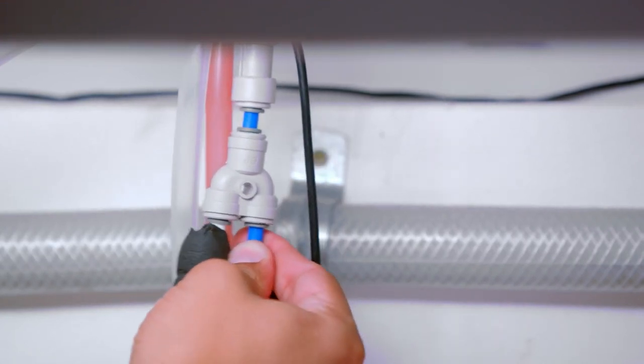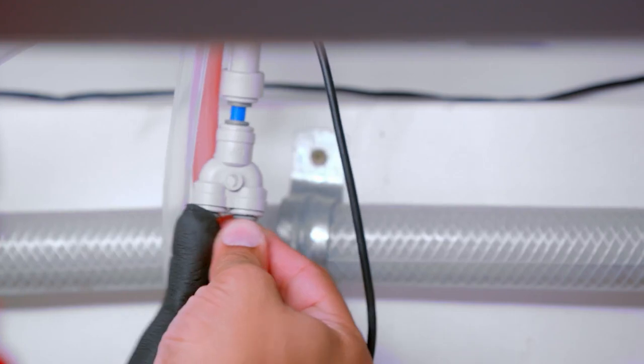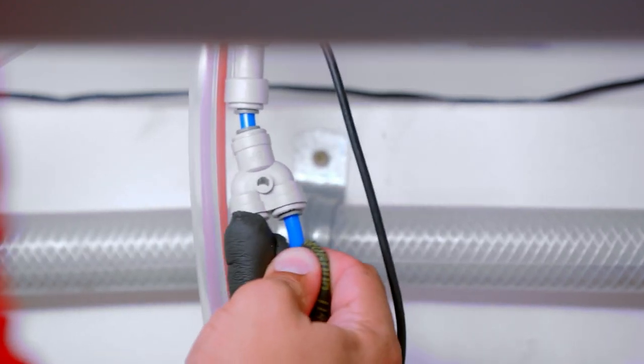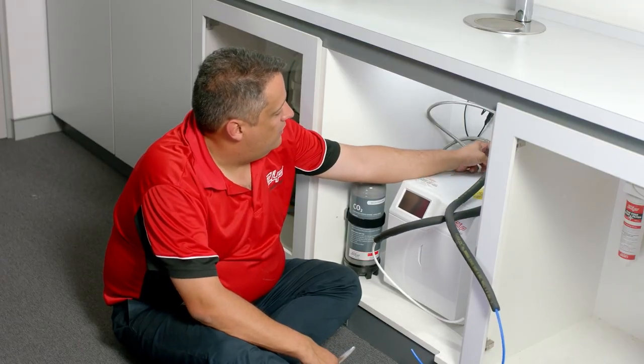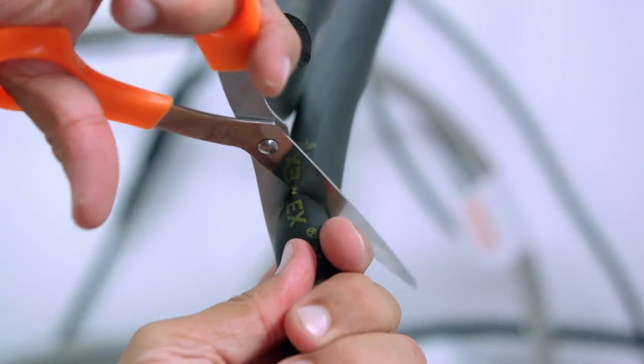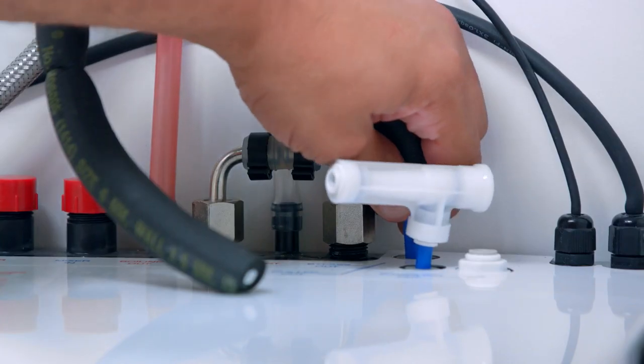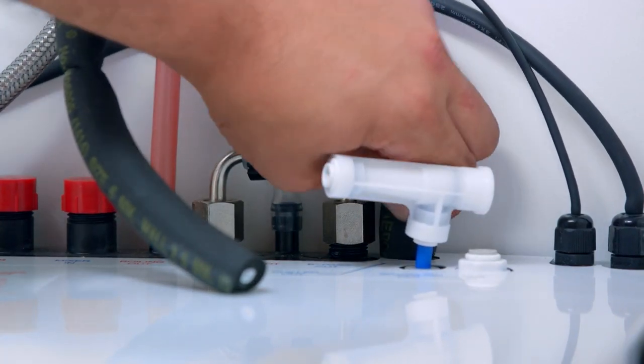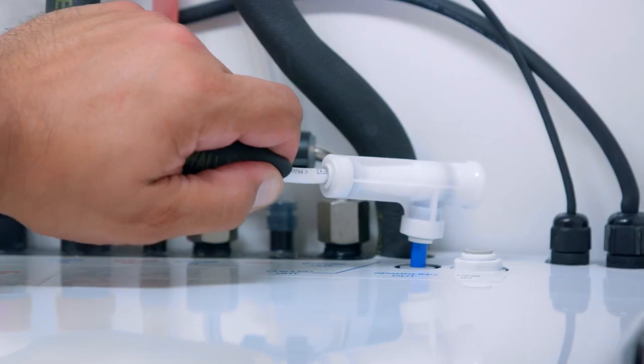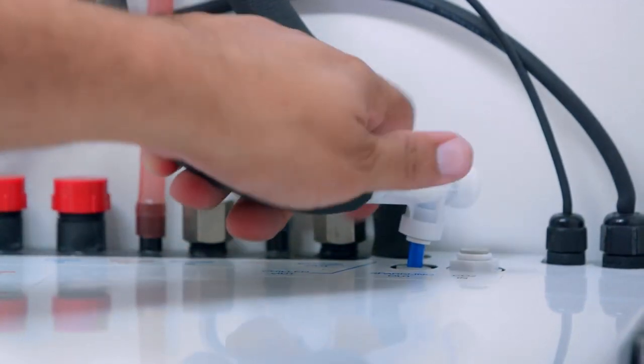Once you've fitted the hoses to the tap, you need to cut the hoses to length and then fit them to the HydroTap. Mark up the hoses so they have good fall from the tap to the unit and then cut them. Plug the blue hose into the chilled out and the white hose into the carbonation valve which is at the sparkling out.